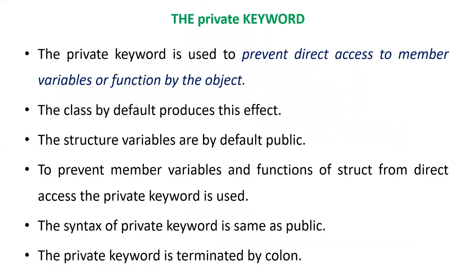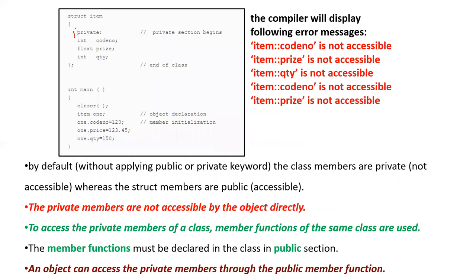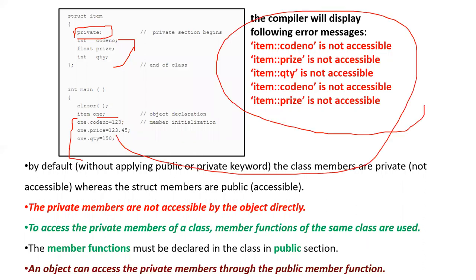Next comes the private keyword. It is used to prevent direct access to member variables and functions by objects. By default, the class produces this private effect. When declared as private, direct access is prevented. To access private members, you must use a public member function. If you try to access directly — for example, object of class 'item' accessing its members — you will get an error: 'item code is not accessible', 'item price is not accessible'. To access the private members of a class, a member function of the same class must be used.